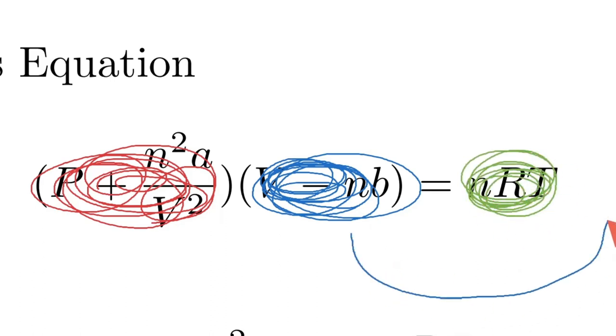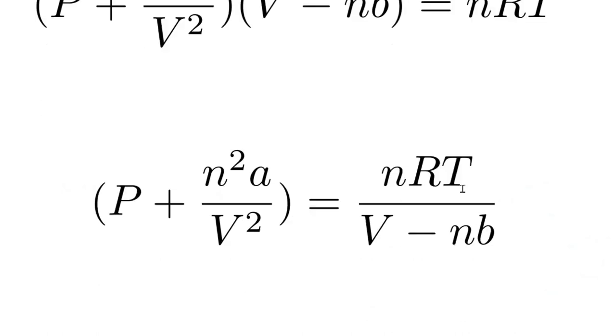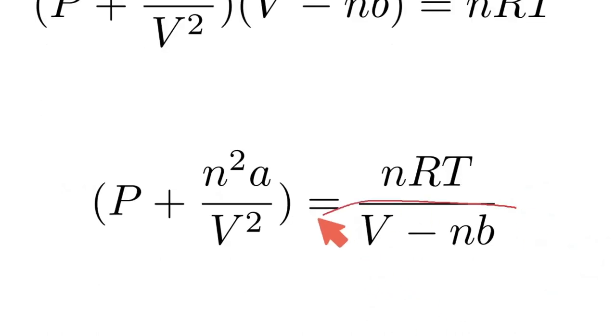So our first task is to move this blue blob over to the other side by dividing both sides by V minus NB. So here's what I end up with: V minus NB is in the denominator, and now I don't even need these parentheses on the left side.